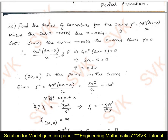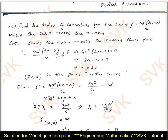Going on to question 2c: find the radius of curvature for the curve y² = 4a²(2a − x)/x where the curve meets the x-axis. Since the curve meets the x-axis, y = 0. Substituting y = 0, we get 4a²(2a − x)/x = 0, so 2a − x = 0, giving x = 2a. Therefore, the point on the curve is (2a, 0).